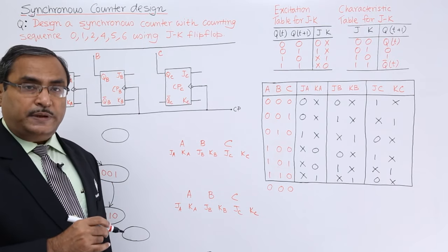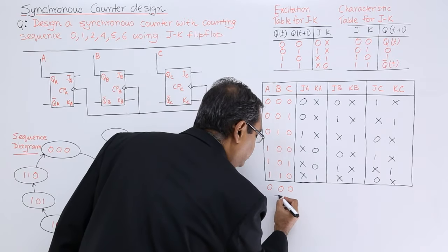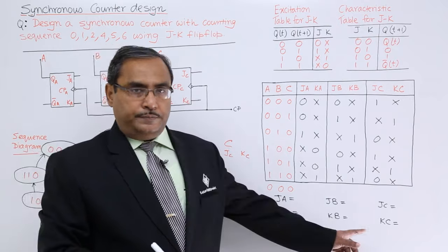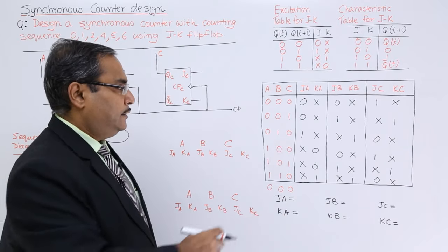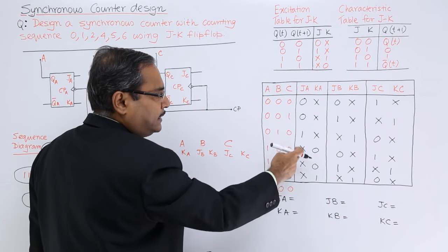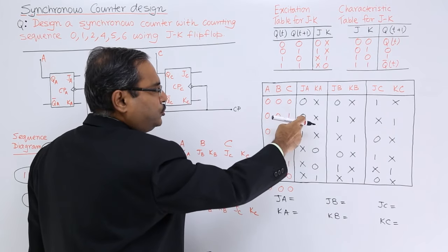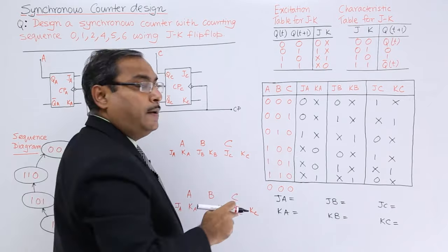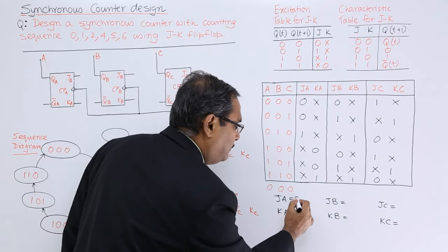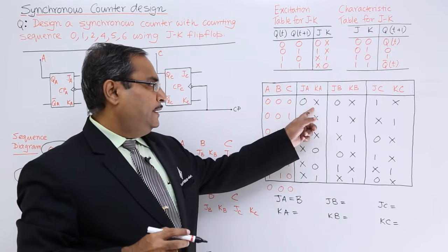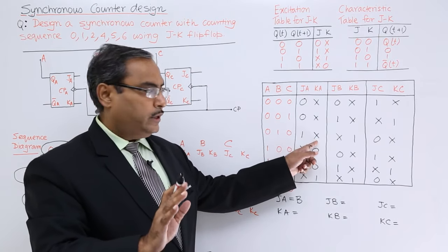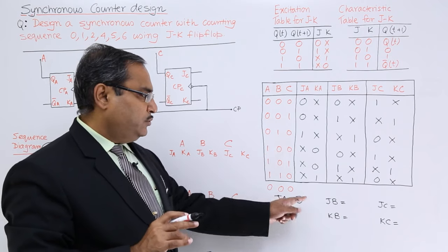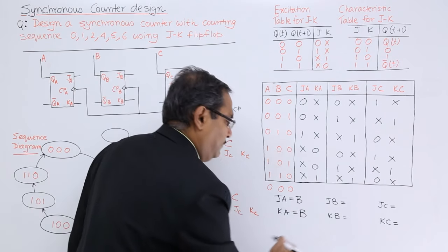Now for the summary. For JA, we need 0, 0, 1 and don't-cares for the rest — this matches directly with the B column, so JA = B. Similarly, KA also matches B, so KA = B. I write B for both JA and KA.